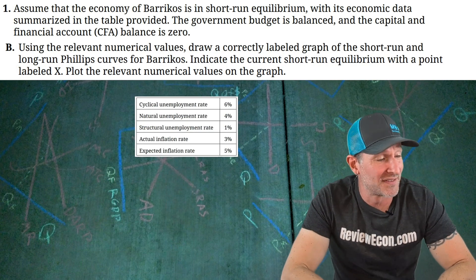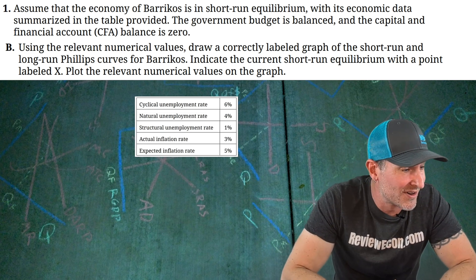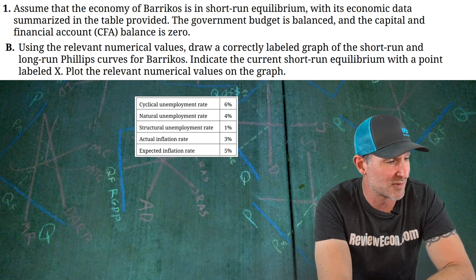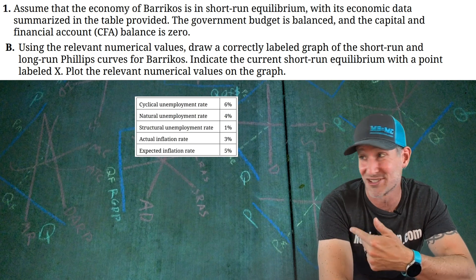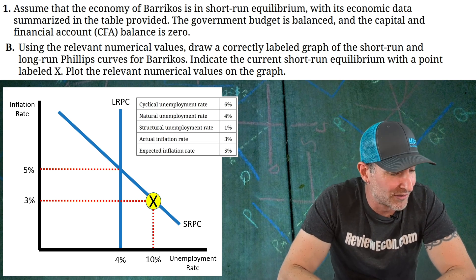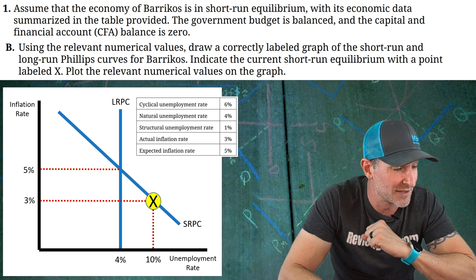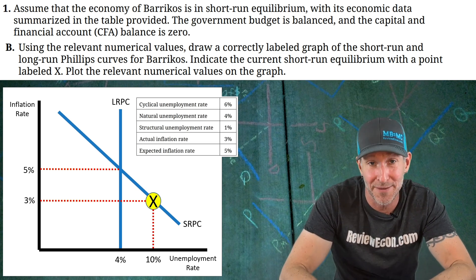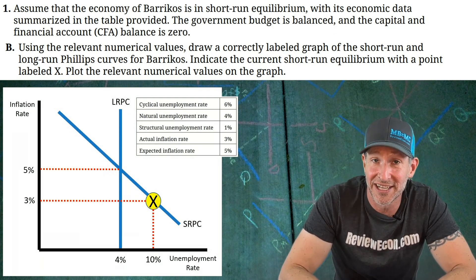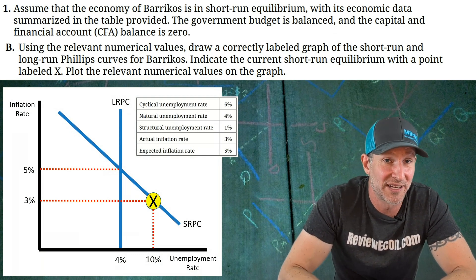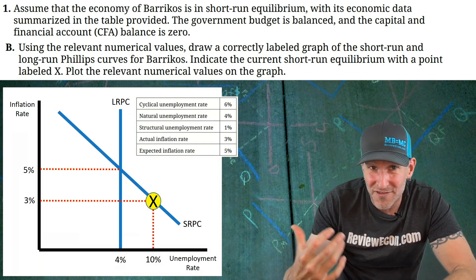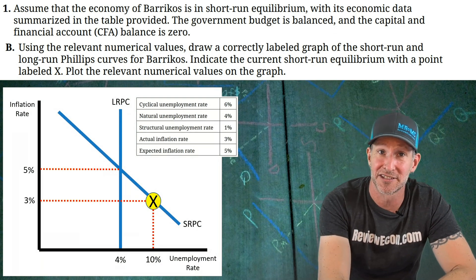Moving on to Part B, we have to draw a Phillips curve using the numbers in the table — both the short-run and long-run Phillips curves for Barricos — and label the current short-run equilibrium as point X. We have our long-run Phillips curve that is vertical at 4%, the natural rate. We have a downward-sloping short-run Phillips curve, with point X at our current unemployment rate of 10% and 3% actual inflation. At the intersection of the two curves we have our expected inflation rate of 5%. I'm not sure if all those values will be required — it will depend on how hard they make this point in the rubric.